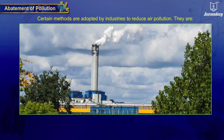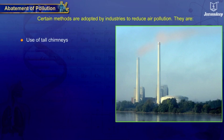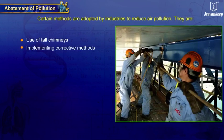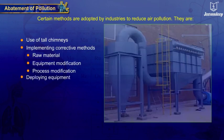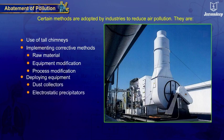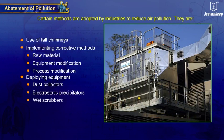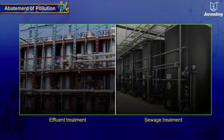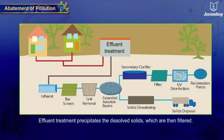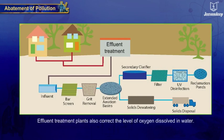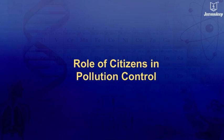Certain methods are adopted by industries to reduce air pollution: use of tall chimneys to weaken source discharge; implementing corrective methods like changing the raw material, equipment modification, or process modification; and deploying equipment like dust collectors, electrostatic precipitators, and wet scrubbers to control pollution. To reduce water pollution, industries carry out effluent treatment and sewage treatment. Effluent treatment precipitates the dissolved solids which are then filtered, and also corrects the level of dissolved oxygen in water.